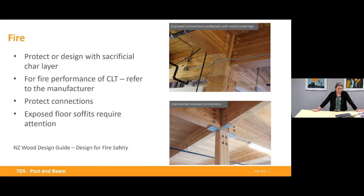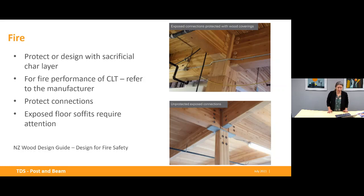One way to protect connections is to conceal them within the char layer, like the top image, by plugging bolt holes. In addition to fire resistance ratings, surface finishes to control the early spread of fire and production of smoke in certain building types also require designers' attention. For post and beam construction, the heavy beams and columns are typically excluded from these requirements. However, exposed timber panels — such as on the underside of floors and ceiling systems — must be considered in areas such as exitways and Importance Level 4 buildings.